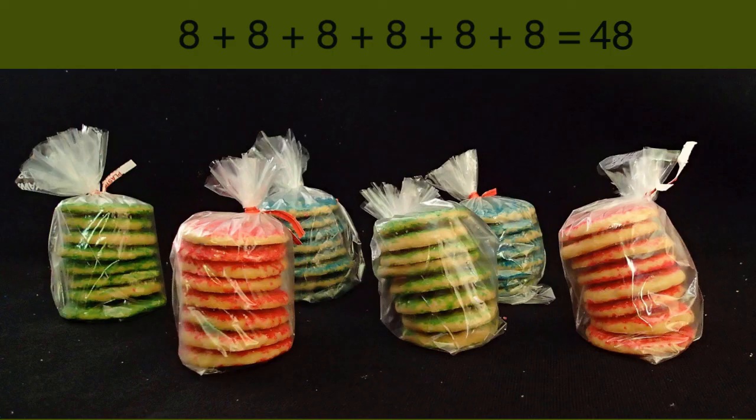This repeated addition works great, and it's a lot faster than counting them out individually. Instead of looking at the cookies one by one, we viewed them as 6 groups of 8 cookies each. We counted a set of things more effectively by organizing them into equal size groups.